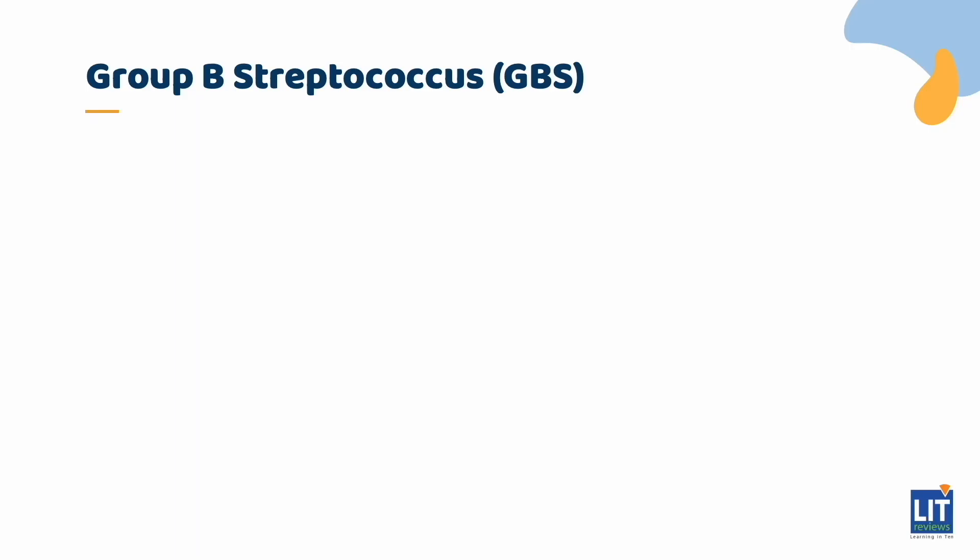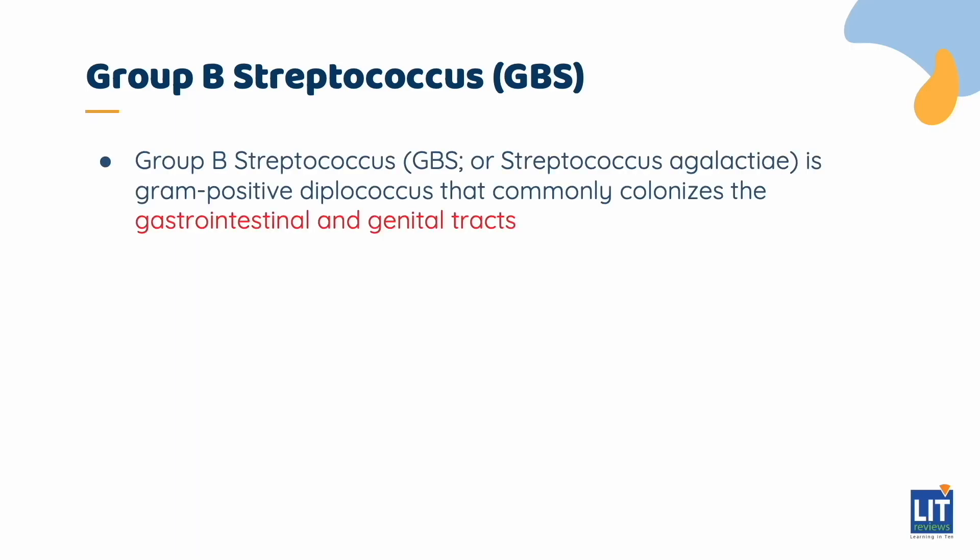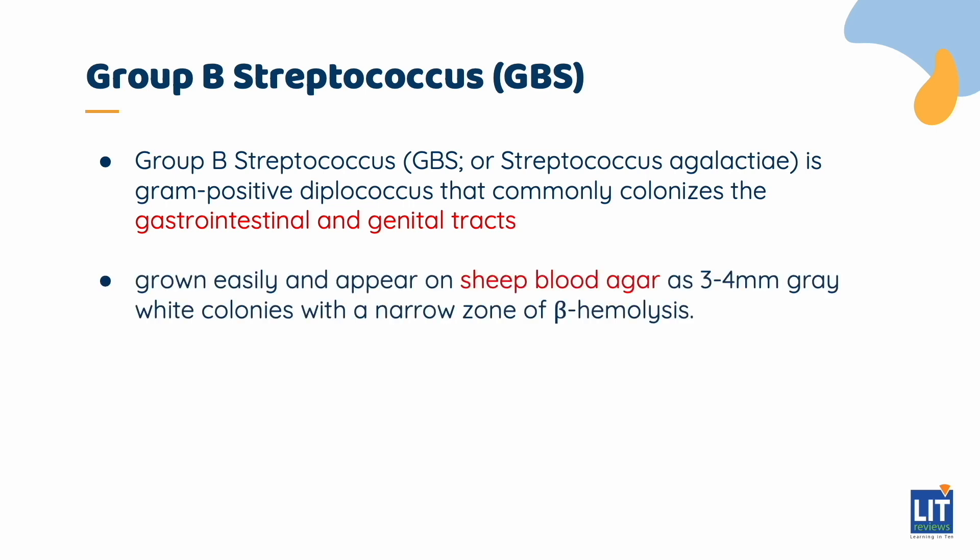Group B Streptococci are facultative gram-positive cocci that are grown easily. They appear on sheep blood agar as three to four millimeter gray-white colonies with a narrow zone of beta hemolysis.